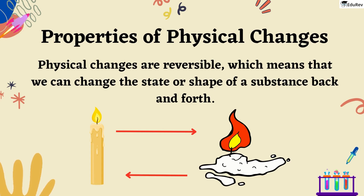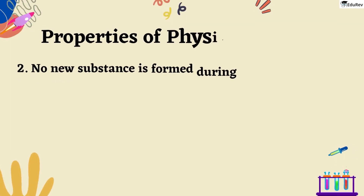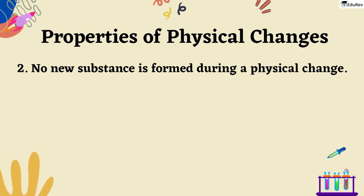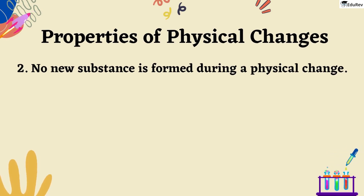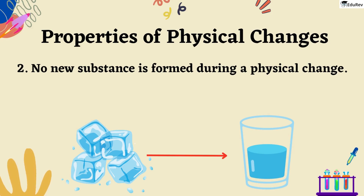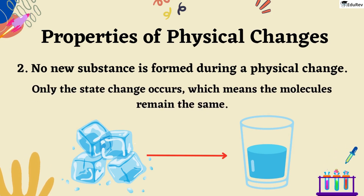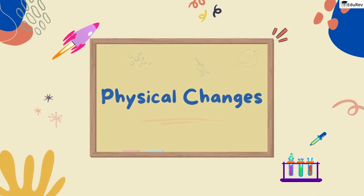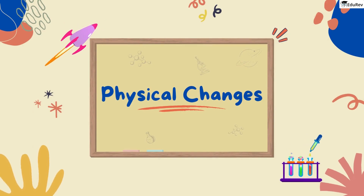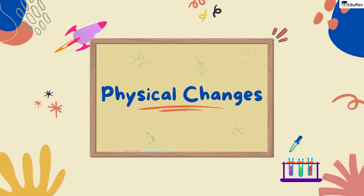Here the change is temporary. Secondly, no new substance is formed during a physical change. For instance, the ice cube melts to form water. Here only the state change occurs, which means the molecules remain the same. So students, with this you have learned about how substances can undergo physical changes, like changes in state.